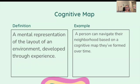Cognitive map. This is a mental representation of the layout of an environment developed through experience. So for example, a person can navigate their neighborhood based on cognitive map they've formed over time.